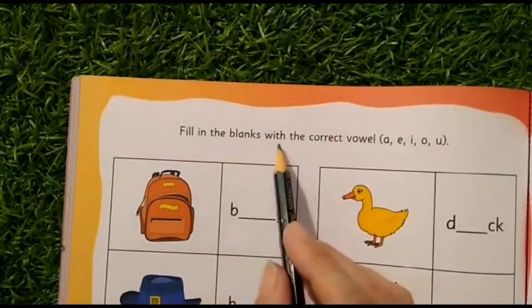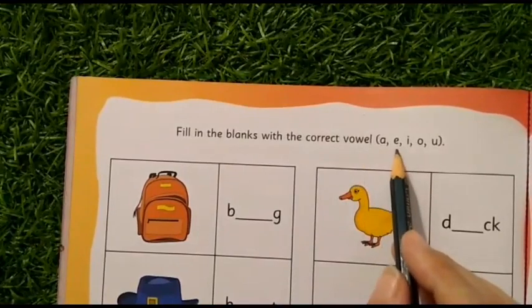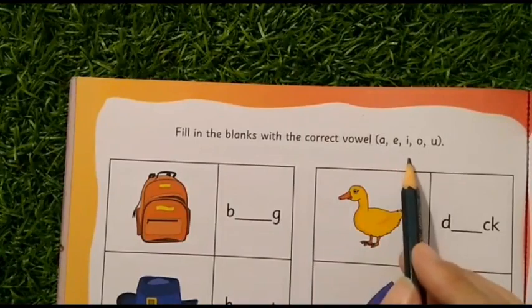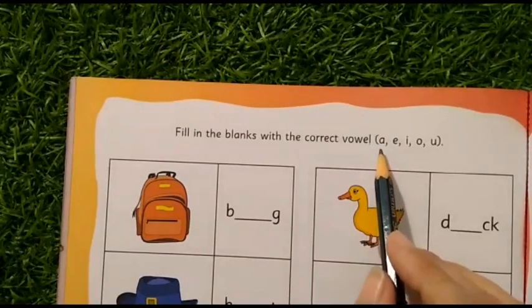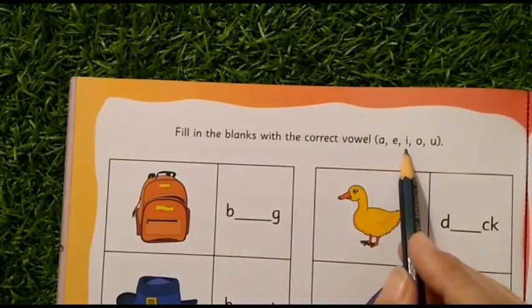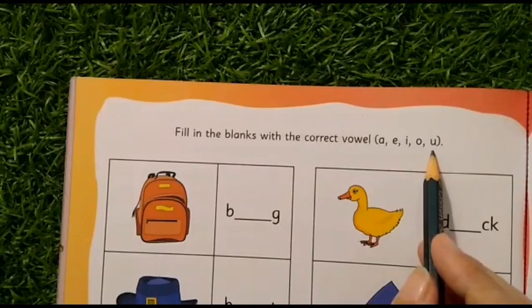Fill in the blanks with the correct vowel. It's A-E-I-O-U. Let us say the sound. You also repeat the sound after me. A says A. E says Eh. I says I. O says O. U says A.